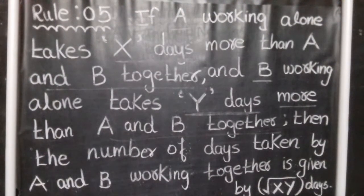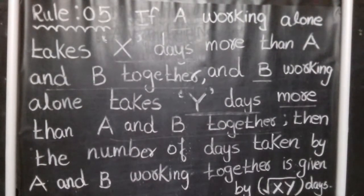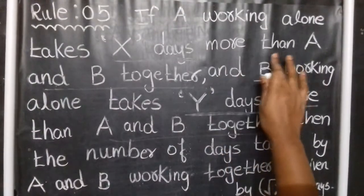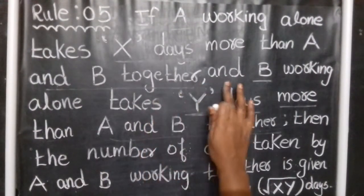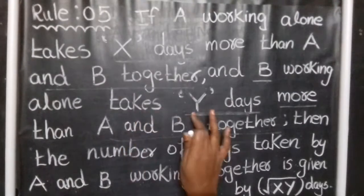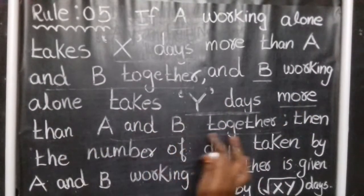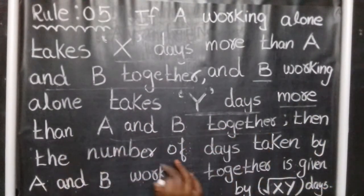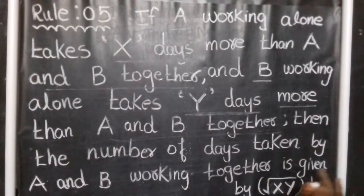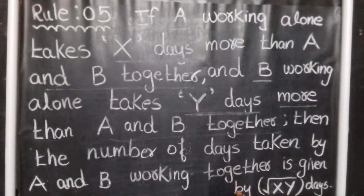Time and work related questions. Rule 5: If A working alone takes X days more than A and B together, and B working alone takes Y days more than A and B together, then the number of days taken by A and B working together is given by the square root of X times Y days. You can solve it using this shortcut.